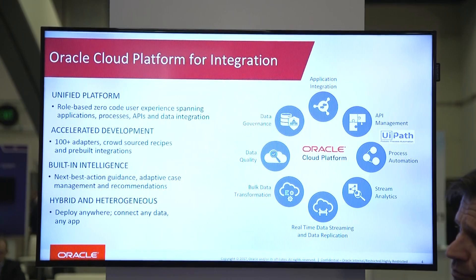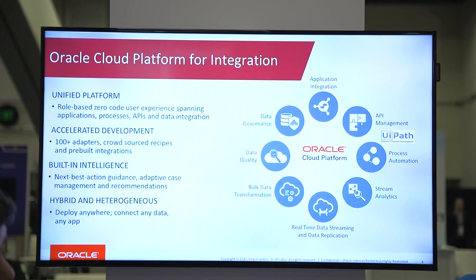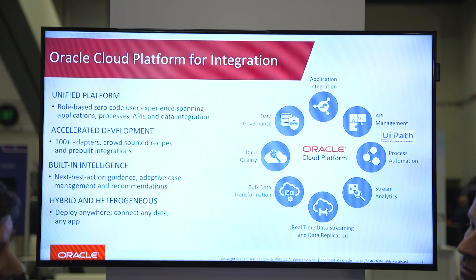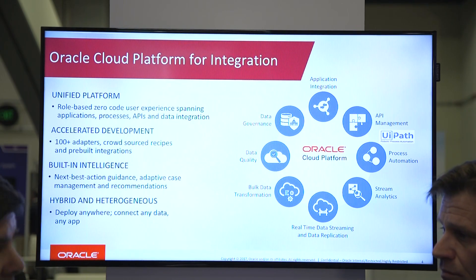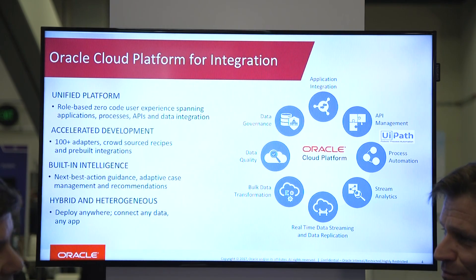Let's talk about use cases first — where this is actually going to be used and what customers would think about using it for. One of the first things I wanted to do was to plot UiPath within the Oracle integration portfolio. If you look at the screen, we have different products that comprise the Oracle Cloud Platform for integration. Whenever we're talking about application integration and process automation, that's where we see UiPath bringing a lot of value. That's what Vikas announced yesterday — the creation of a new UiPath RPA adapter, so that from Oracle Integration Cloud we can seamlessly connect to UiPath technology, discover the robots you create, and dispatch them as part of a larger business process execution.